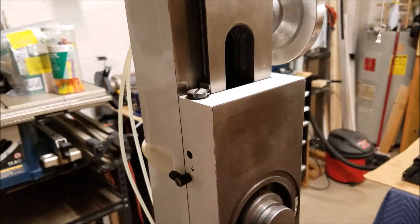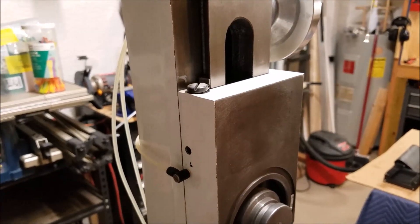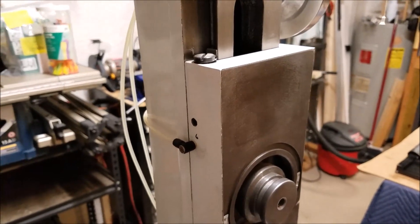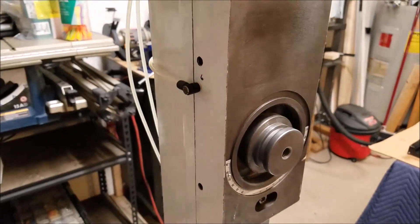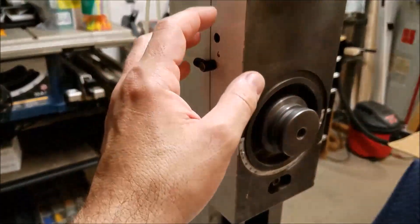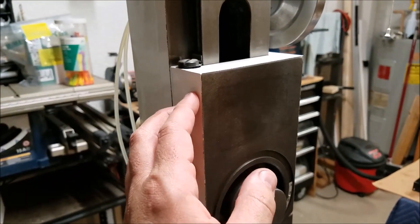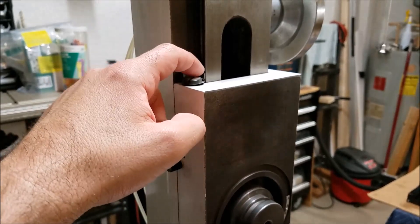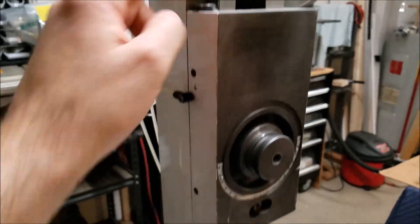If you have ever seen like a Bridgeport milling machine or any kind of other milling machines, I'm sure you'll see something similar to that with the way those gibs are made. So there you go. The machine channels, you have to make a small modification to the gibs. Not a big deal.